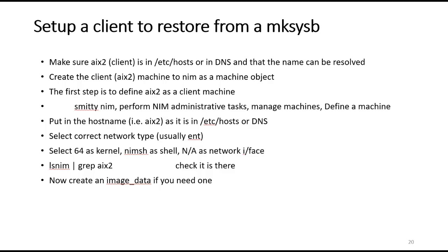If you want to set up a client to restore from a makesysb — whether installing a new client or restoring from a makesysb — first make sure the machine is in /etc/hosts or DNS and you can resolve the name. Then create a machine resource in NIM for that client. Go to manage machines and define a machine — in this case calling it AIX2, selecting the correct network type, which is usually ENT, fill in the parameters, and then you should be able to see with LSNIM that it's there.